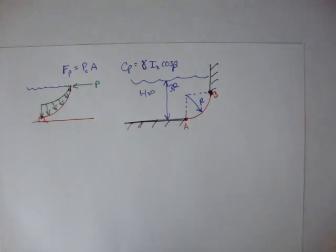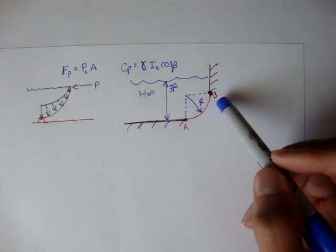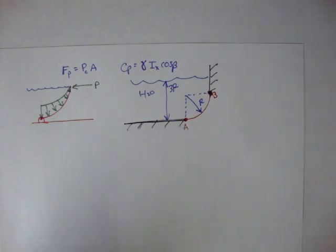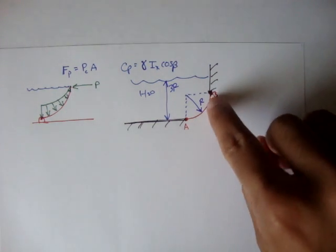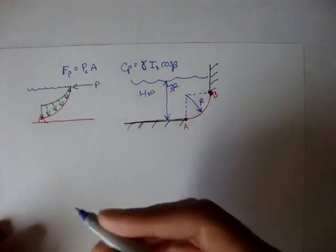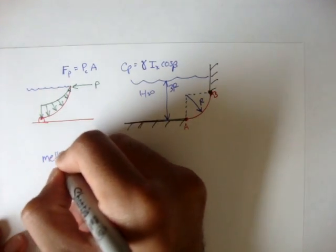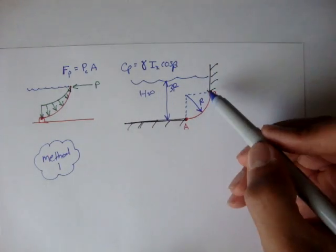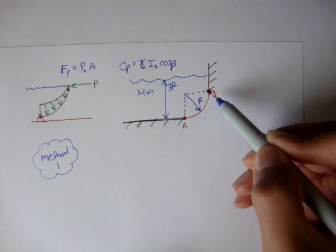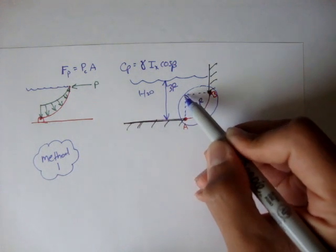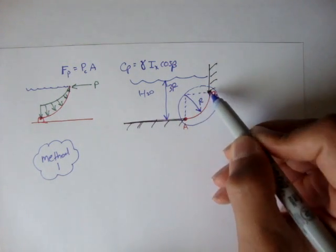We can actually use two methods to analyze this situation. Say the question is asking: what's the force at B? We can figure it out if it was a flat gate from A to B, but this time it's a curved gate. Method 1 is to take this whole chunk — the gate plus this quarter circle chunk of water — and draw a free body diagram of that.